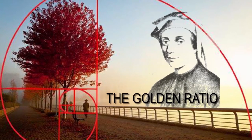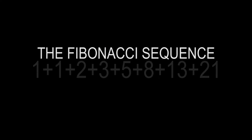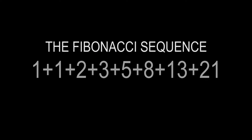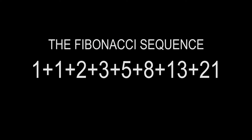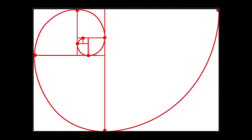The golden ratio comes from the Fibonacci sequence, which is a series of numbers that add up to each other — for example, one plus one equals two, one plus two is three, two plus three is five, and so on. To put that into a physical form and how it relates to framing: